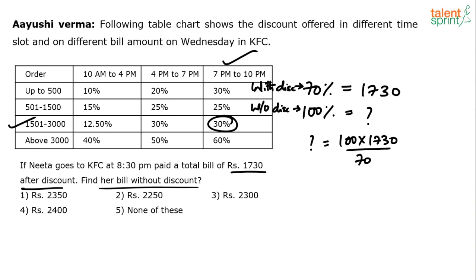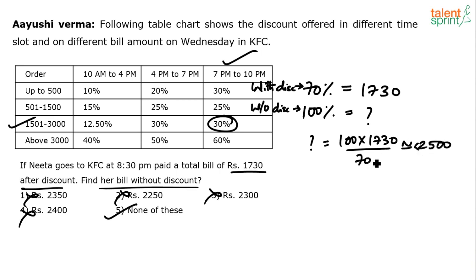More precisely, 1730/70 × 100: 173/7 ≈ 24.7, so approximately 2471. No option is close to 2500 or 2471, so option 5 — none of these — is the answer.